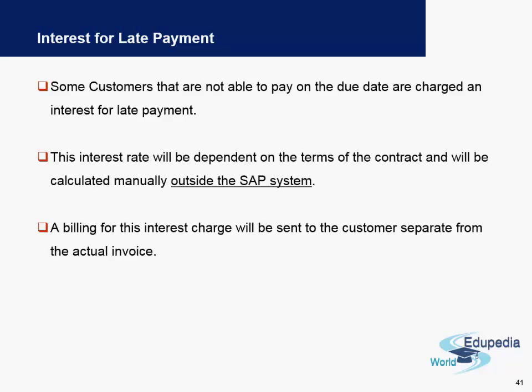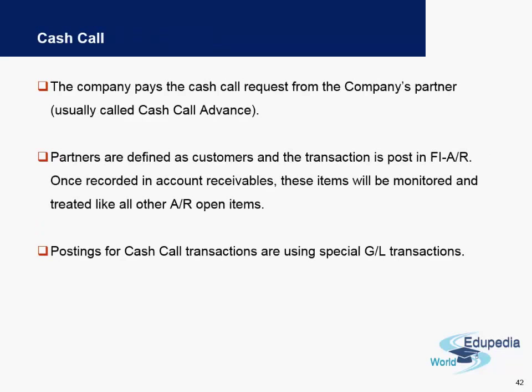We also have interest charges to the customer when they are not able to pay on or before the due date. This interest is charged based on the interest indicator, which is already a part of the customer account master. The interest rate is a rate decided between the organization and the customer when they enter into a contract, and this rate is part of the interest indicator in the configuration.